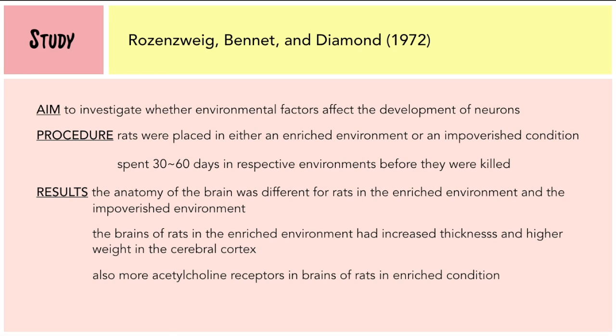The results showed that the brain anatomy was different for rats in the enriched environment versus the impoverished environment. The brains of rats in the enriched environment had increased thickness and higher weight in the cerebral cortex, and there were more acetylcholine receptors in their brains compared to the impoverished condition. This study showed that the environment plays a huge role in the development of neurons.